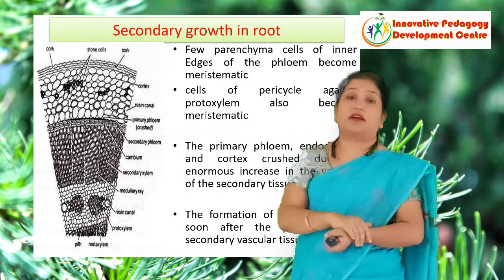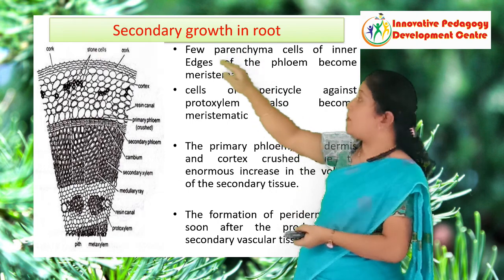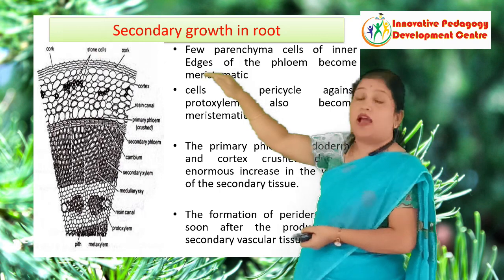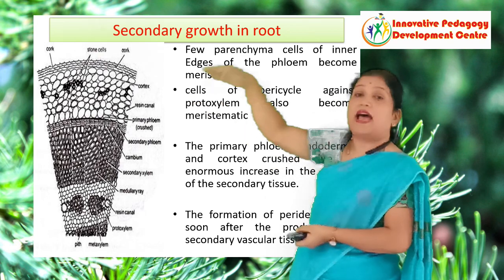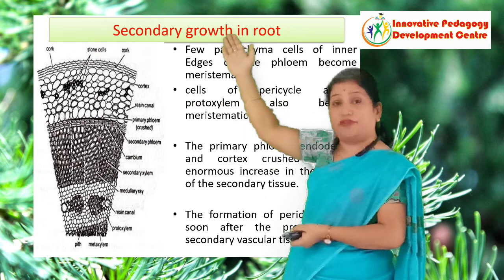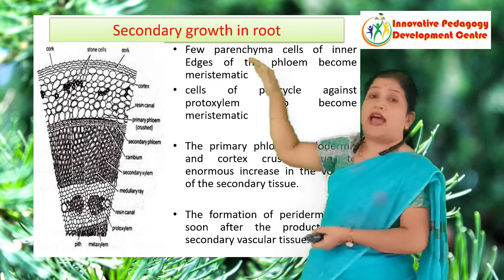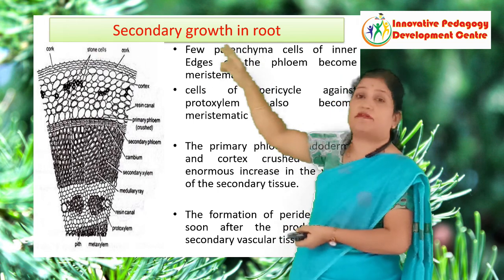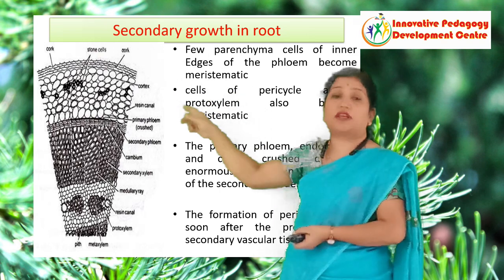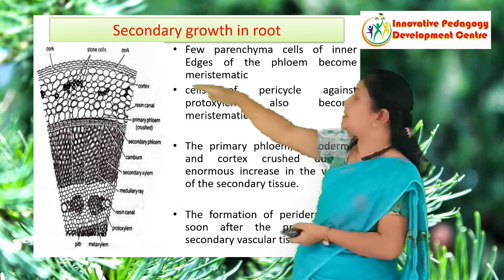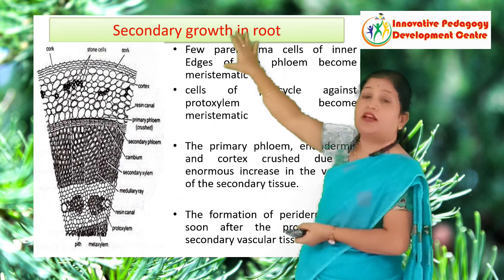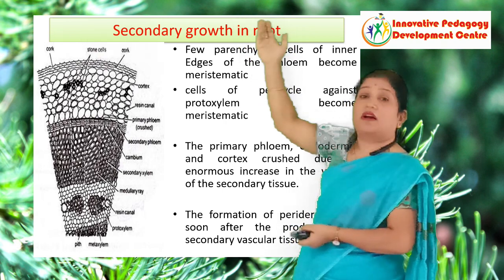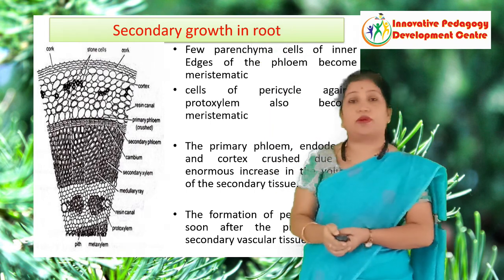Regarding secondary growth of the root, some strips inside the phloem become active as cambium strips. They add secondary xylem centripetally — toward the center — and secondary phloem centrifugally, away from the center. Later the active cambium strip in the pericycle region opposite to the protoxylem joins, so initially the ring formed is wavy but later becomes circular. Due to secondary growth, enormous pressure from the inner side causes the primary tissue to get crushed. Outside the vascular region, the cork cambium becomes active and adds cork and secondary cortex.